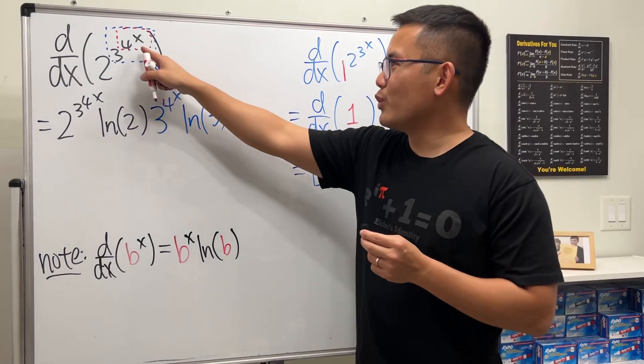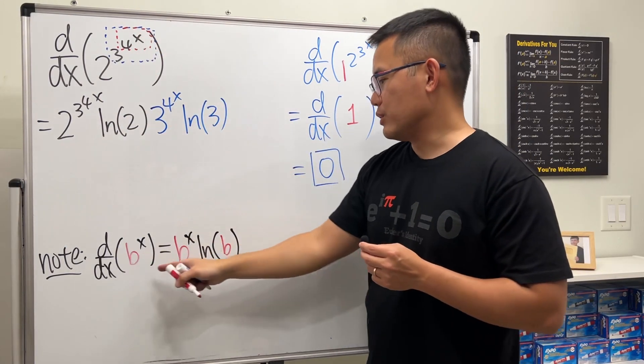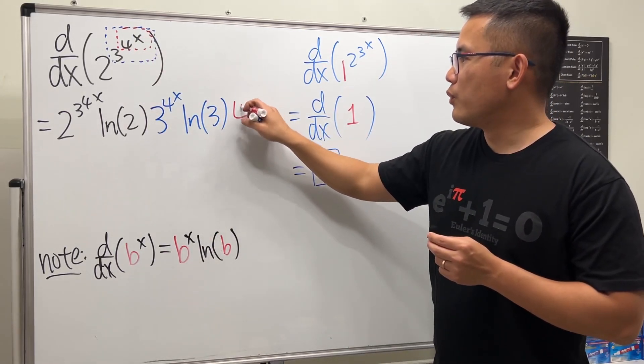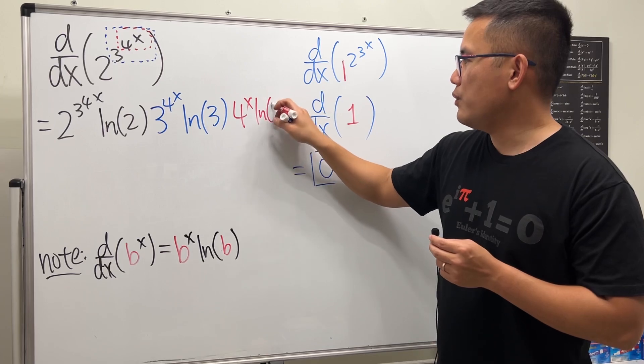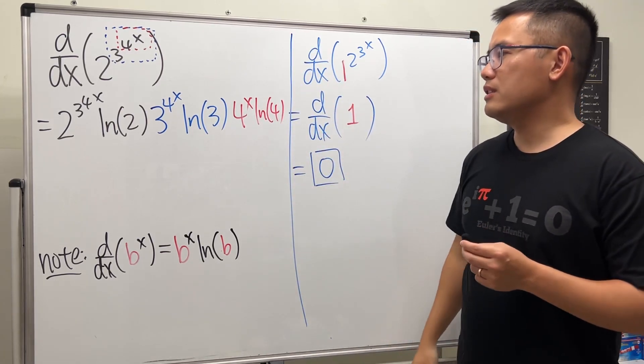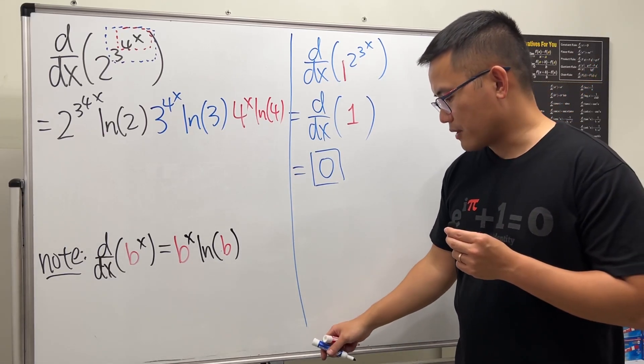Lastly, use the chain rule one more time. Multiply by the derivative of 4 to the x, and we can just use this formula. The derivative of 4 to the x is just 4 to the x times ln 4. That's pretty much it. If you want to box the answer right here, I think it's perfect.